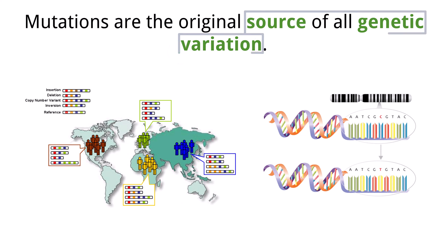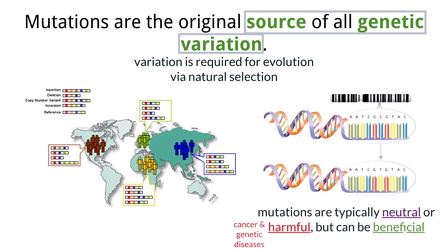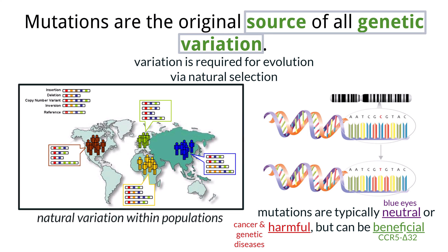Mutations are the original source of all genetic variation, and this variation is essential for evolution by natural selection. Mutations are typically harmful or neutral — cancer and genetic diseases like Huntington's disease and cystic fibrosis result from harmful gene mutations. The mutation that led to blue eyes is probably an example of a neutral mutation, as it does not significantly affect survival or reproduction. The CCR5 delta 32 mutation is an example of a beneficial mutation, giving some people resistance to certain strains of HIV. Without variation amongst individuals, natural selection would have nothing to operate on, and evolution via natural selection would not occur. Environments are always changing, and organisms evolve with them only because variation is present.